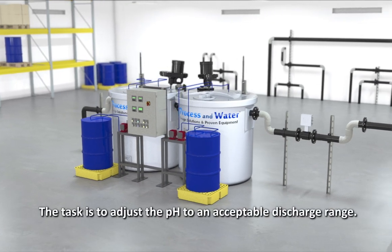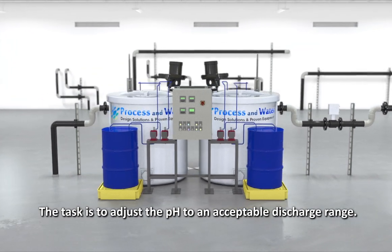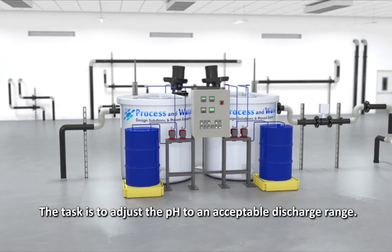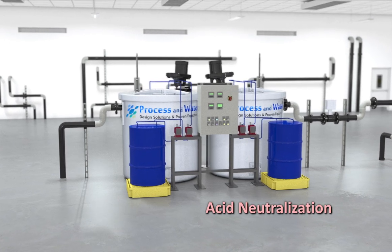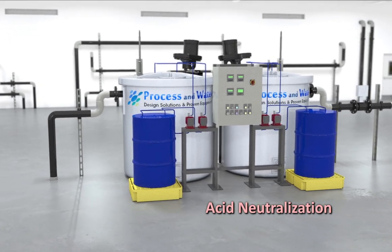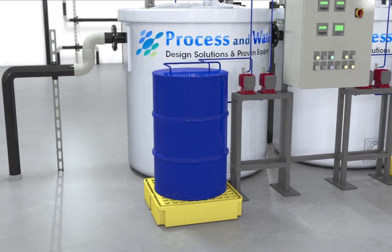The task of any pH adjustment system is to adjust the pH of the process stream into the defined acceptable discharge range. In the case of an acid neutralization, caustic NaOH is added to the effluent stream to neutralize the pH of the solution.